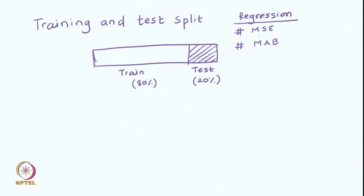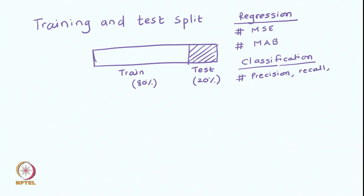In the case of classification, we first compute the confusion matrix and we calculate measures like precision, recall, and F1 score to measure the performance of the classification. Sometimes we also use accuracy as a measure. Accuracy as a measure is not stable — it does not work well when your dataset is imbalanced, when you have way too many examples from one class and too few from the other.